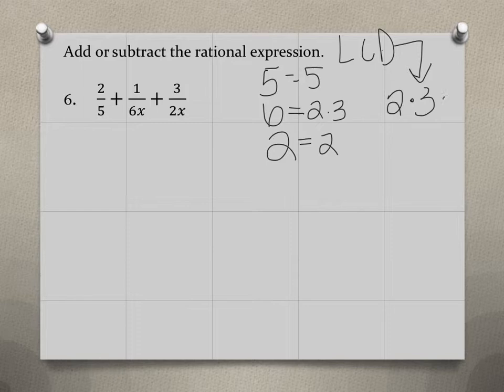We need to include that in our least common denominator. So the least common denominator for 5, 6, and 2 would be 30.